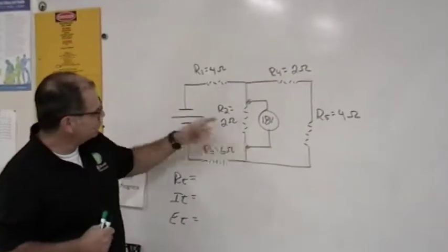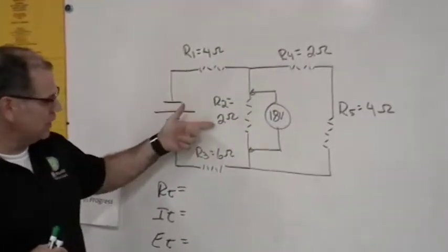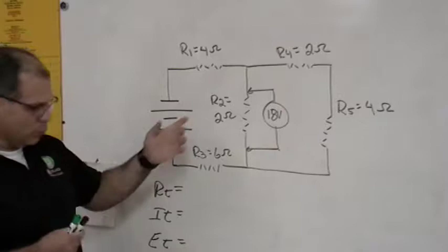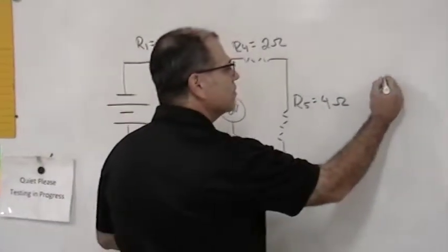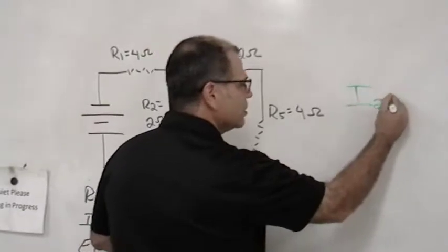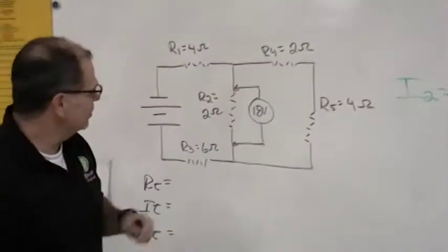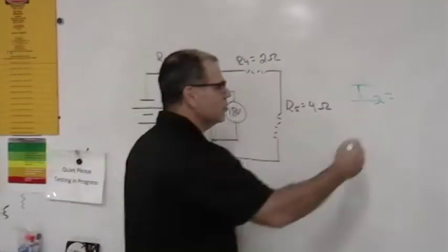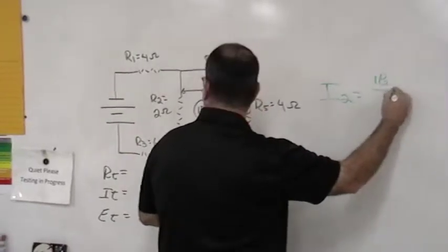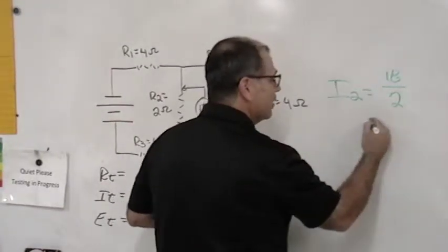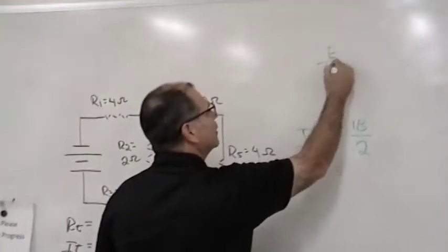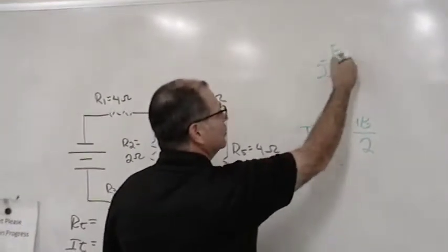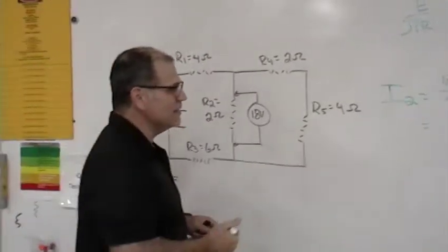We know that we have 18 volts across R2, at the 2 ohms. So we can easily solve for what the current to the second resistor is, right? So the second resistor's current is going to be based on the 18 volts divided by the 2 ohms. Current is equal to the voltage divided by the resistance.